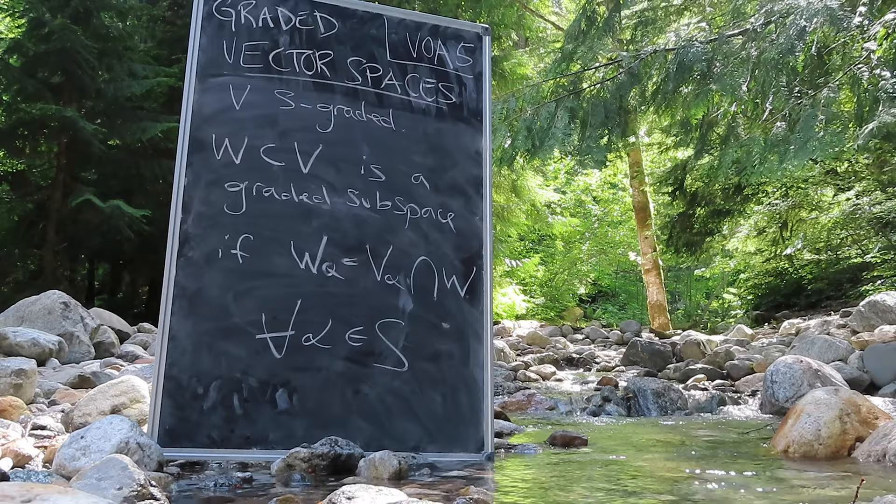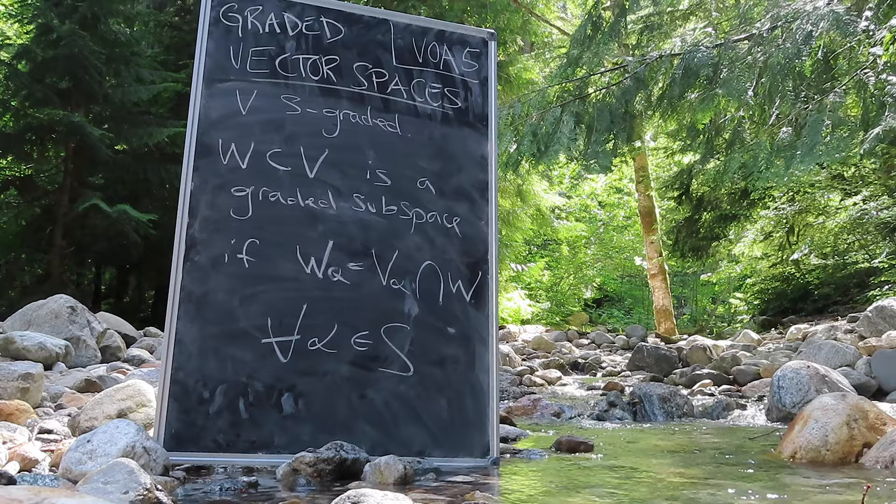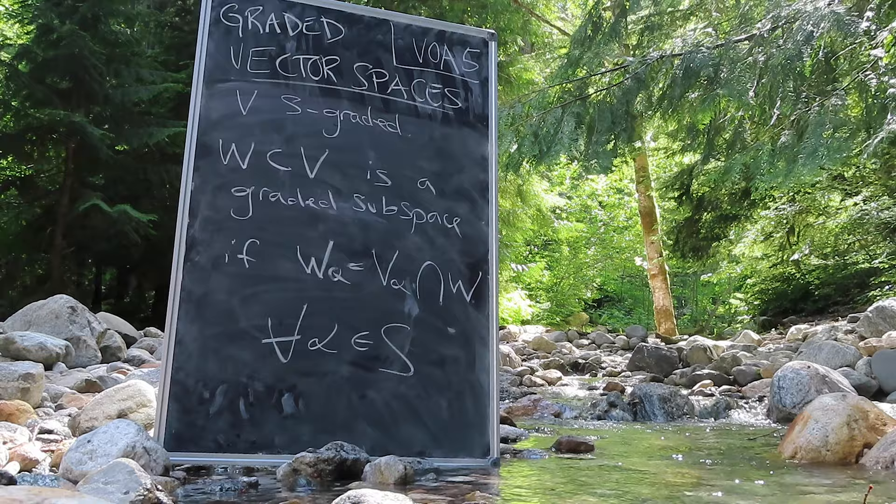A linear subspace W of an S-graded vector space V is a graded subspace if it is also S-graded in such a way that the intersection of W with V sub alpha is equal to W sub alpha, for all alpha in S.